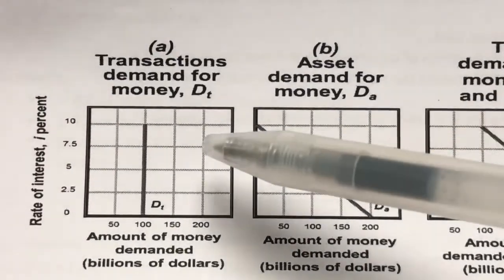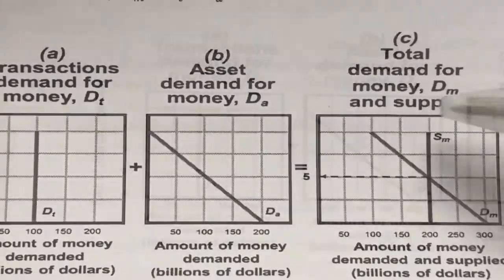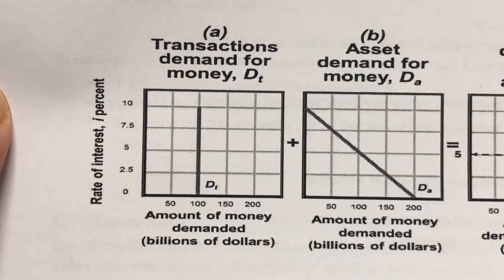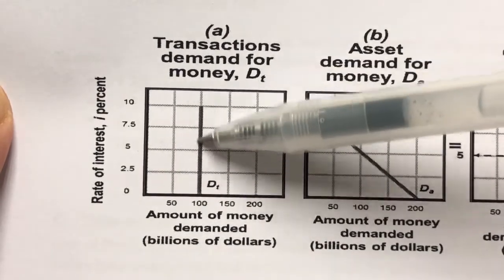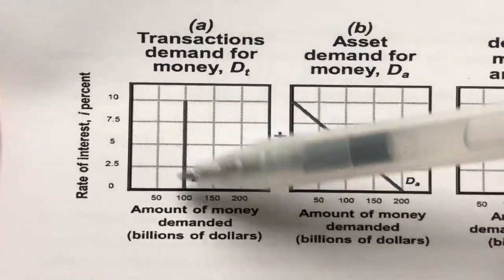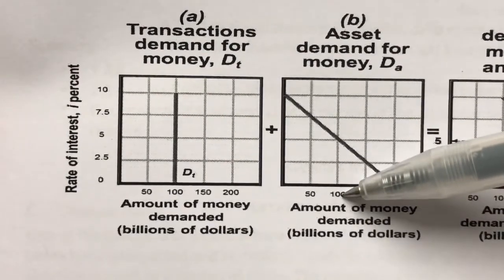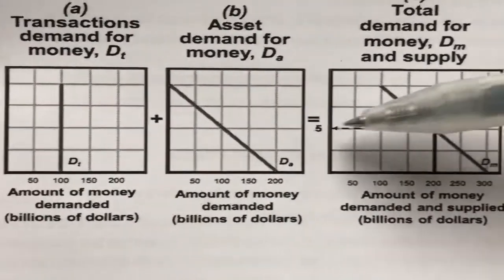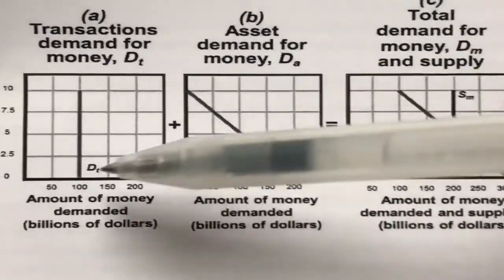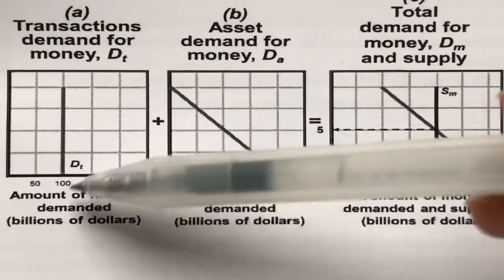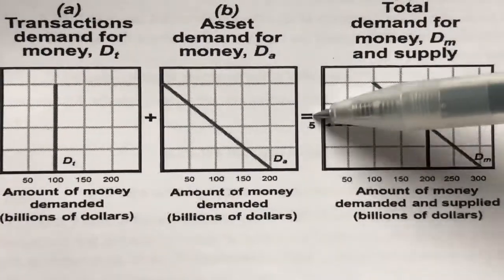Adding both the transaction demand for money and the asset demand for money gives us the total demand for money, DM. What it means by a horizontal summation: say at the 5% interest rate level, the transaction demand for money is 100 billion, and the asset demand for money is also 100 billion. So the total demand for money at 5% interest rate is 200 billion — that is 100 plus 100.